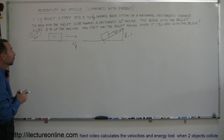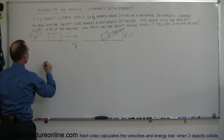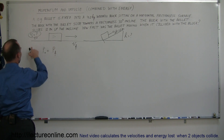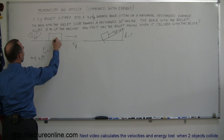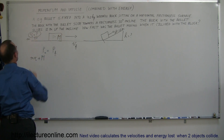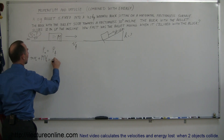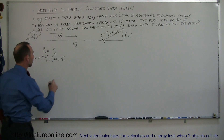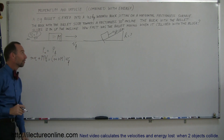Momentum is always conserved in any collision, so when the bullet and the block collide, momentum is conserved: momentum initial equals momentum final. So the mass of the bullet times the initial velocity of the bullet plus the mass of the block (big M) times the initial velocity of the block equals the mass of the bullet plus the mass of the block — because they are now together, it's an inelastic collision — times the final velocity.